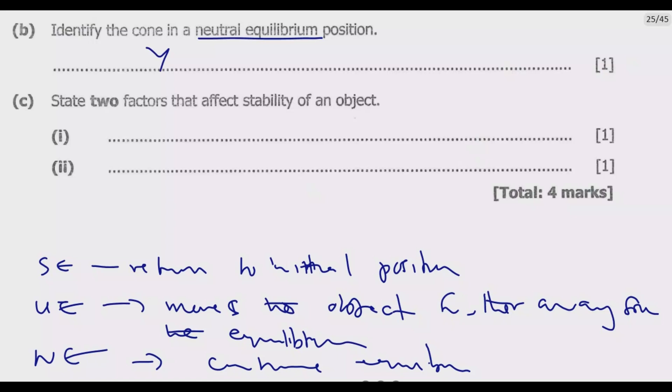Question C: state two factors that affect stability of an object. One of them is the center of mass. The lower the center of mass, the more stable the object is. The higher the center of mass, the more unstable it is.